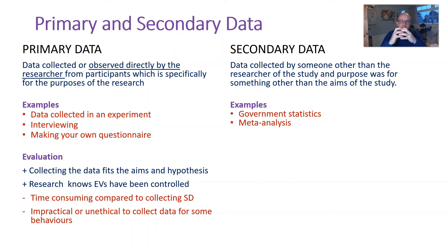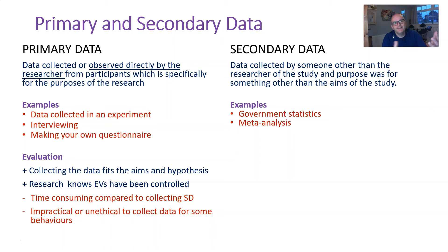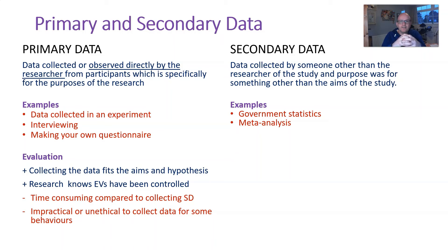Meta-analysis is where you get multiple studies — maybe 10 or 15 — and pull all of their results together to get one combined result. For instance, this might be used with COVID vaccine tests, where each individual test is small-scale with small sample groups. Someone might take eight studies using the same vaccine, pull all the data together, and see if it is successful overall. That's called meta-analysis — the researcher themselves does not collect the data, they just use other people's data.